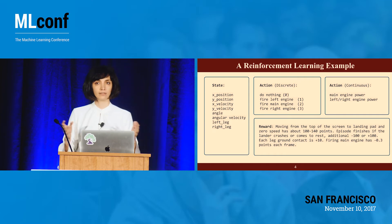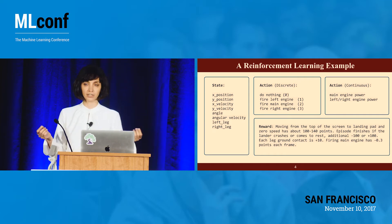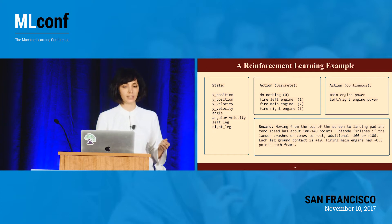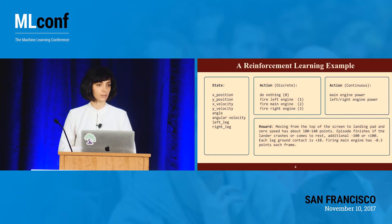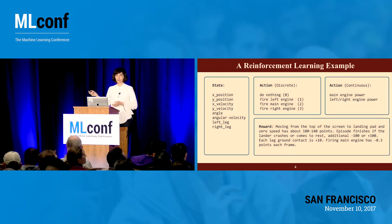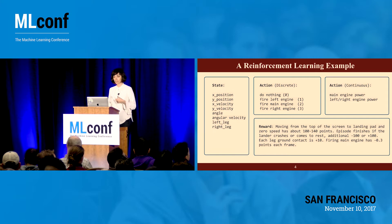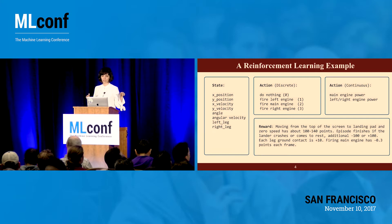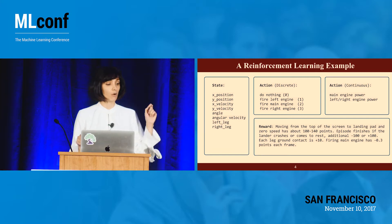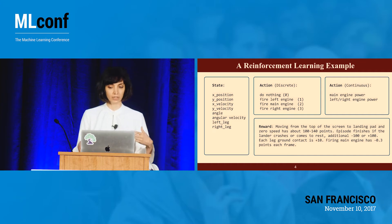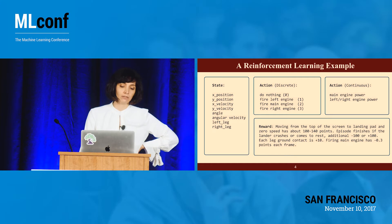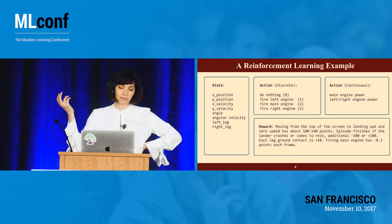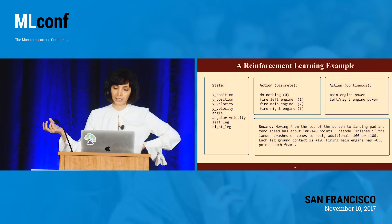Actions are what the agent can do. They can be continuous or discrete, and there are different classes of algorithms to solve them. Discrete actions are simply like fire left or fire right. If it's continuous, it's like specifying exactly how much power we need to fire that rocket. And rewards are defined based on the rules set in the simulator.